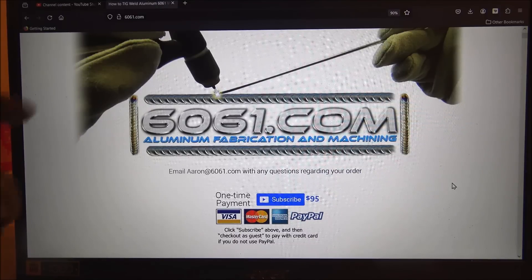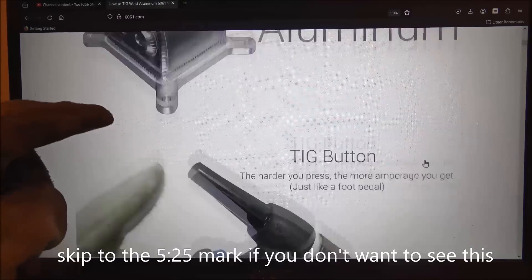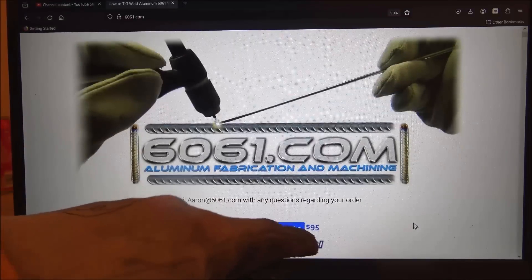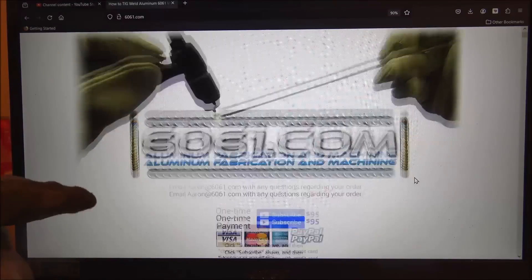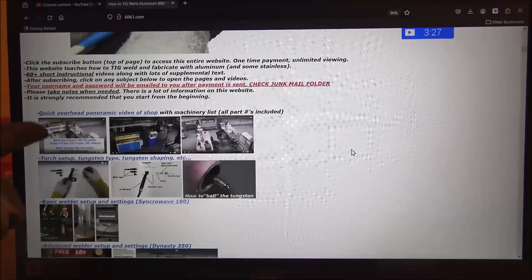Okay, here's a quick ad for my website, 6061.com. All of this stuff is explained. The website is a one-time $95 payment, lifetime subscription. And you can use PayPal or credit card. And it explains everything in detail.